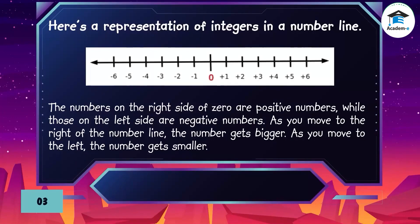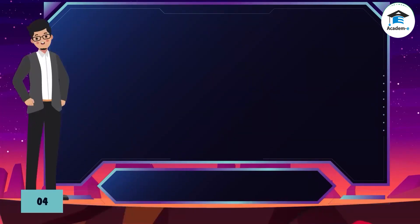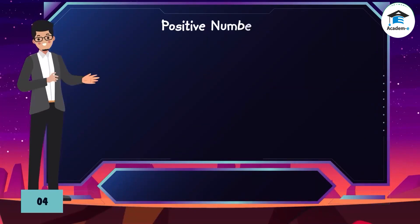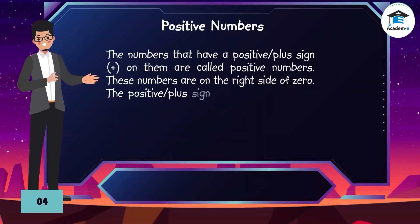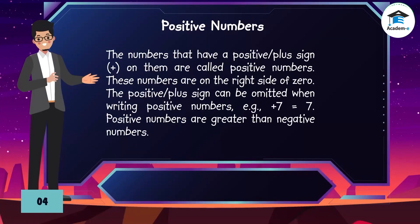As you move to the left, the number gets smaller. Positive numbers: the numbers that have a positive or plus sign on them are called positive numbers. These numbers are on the right side of zero. The positive or plus sign can be omitted when writing positive numbers. Example: positive 7 equals 7. Positive numbers are greater than negative numbers.